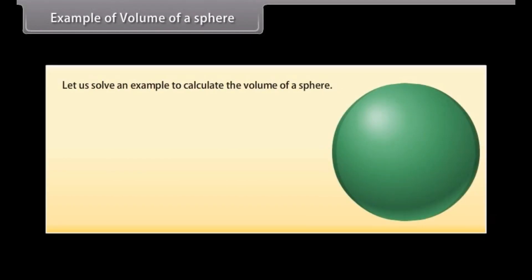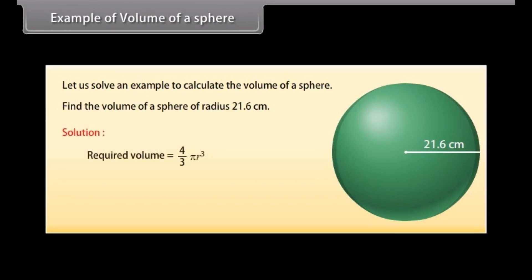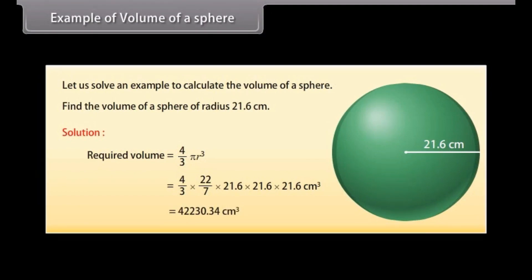Let us solve an example to calculate the volume of a sphere. Find the volume of a sphere of radius 21.6 cm. The required volume = (4/3) × π × R³ = (4/3) × (22/7) × 21.6 × 21.6 × 21.6 cm³, which equals 42,230.34 cm³.